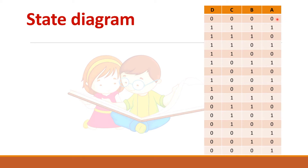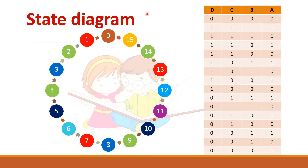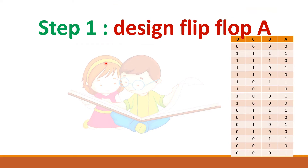I have started with 0, 0. You can start with 15 also — 1, 1, 1, 1. You can mark that as the first state and do the calculation. If you start with 15 it will end in 0, or if you start from 0 it will end in 1. Your table will change, but the final logic diagram remains the same.